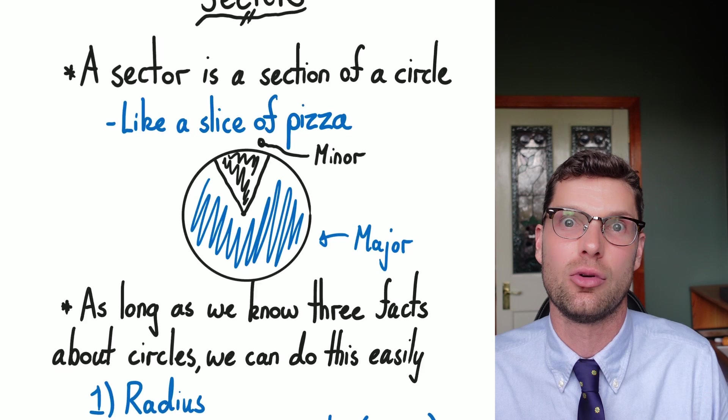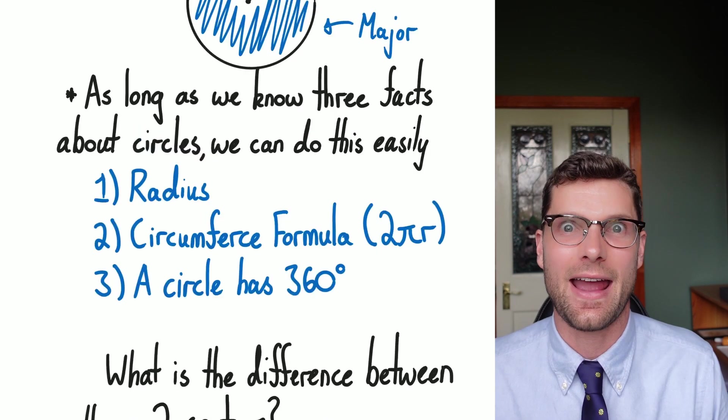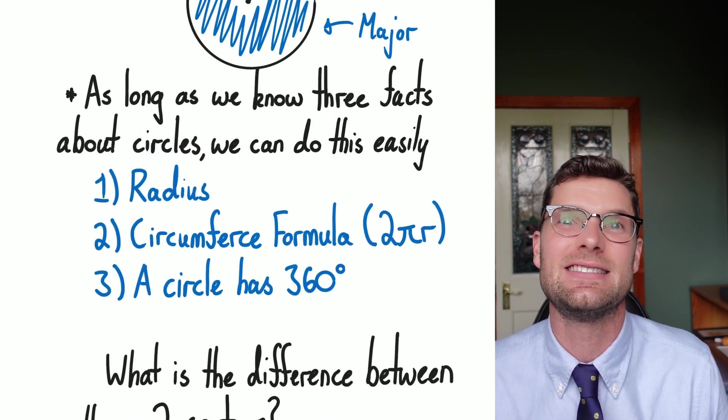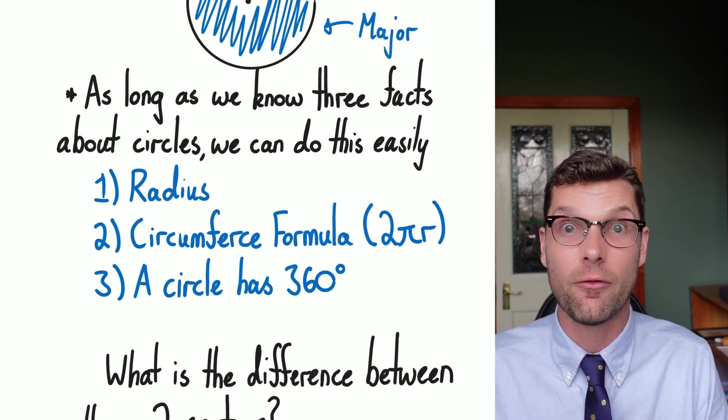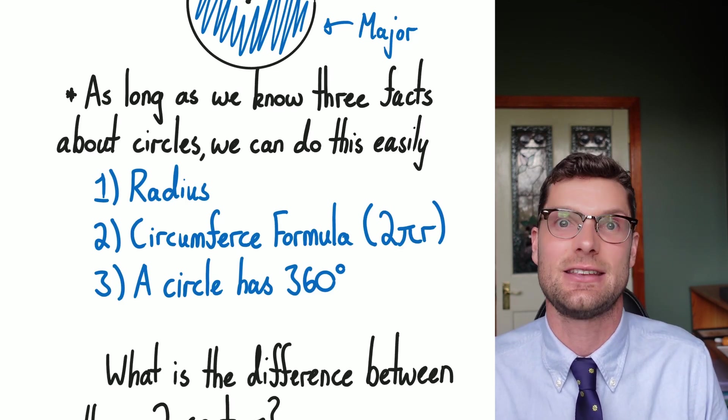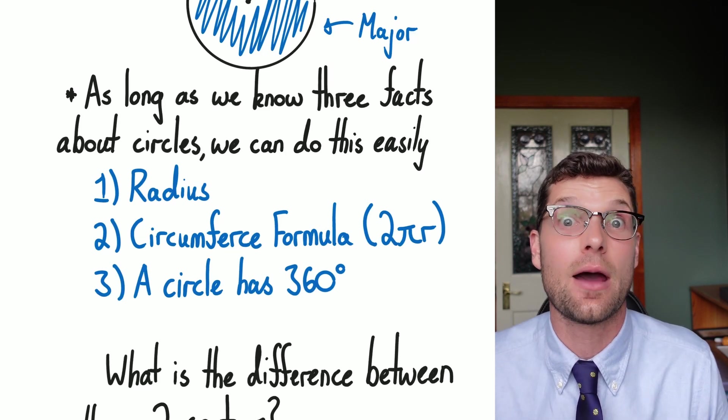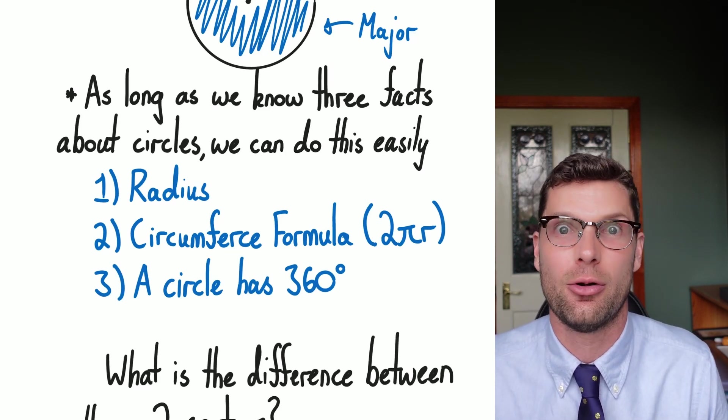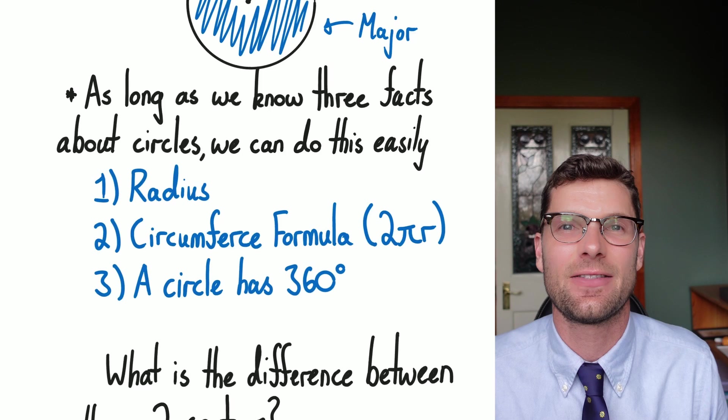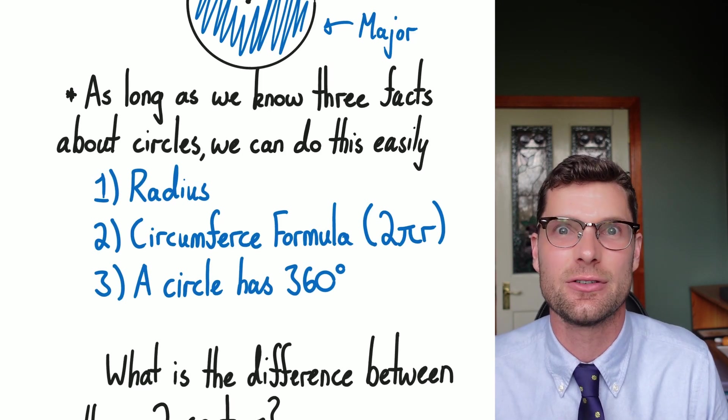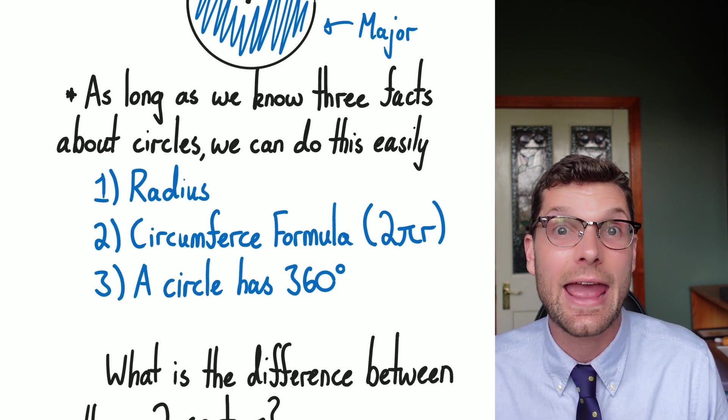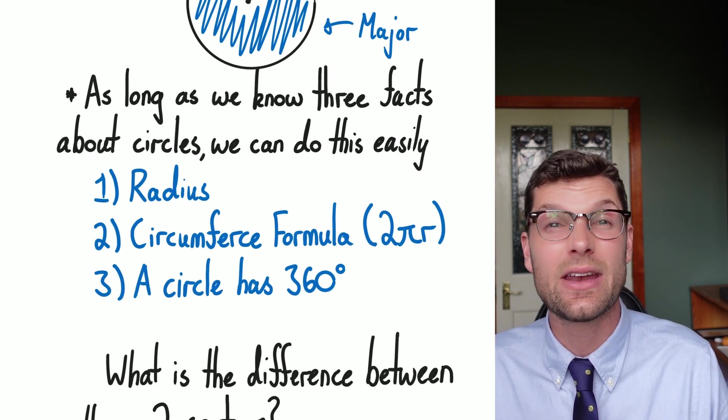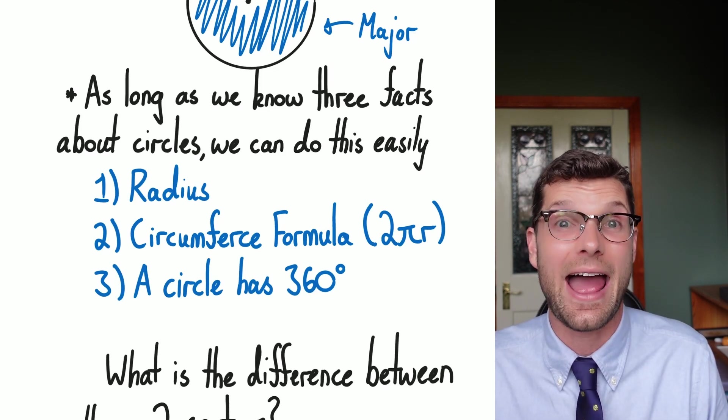As long as we know three facts about circles, we're going to do these easily. We have to know that the radius is always the same from the center out to a section of the circle. This is going to become really helpful when we look at our perimeter questions. The second thing we need to know is what is the circumference formula, or 2πr, pretty easy. And finally, the key bit of information for this is we need to know that a circle has 360 degrees.